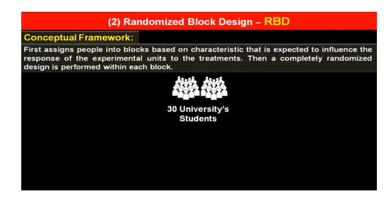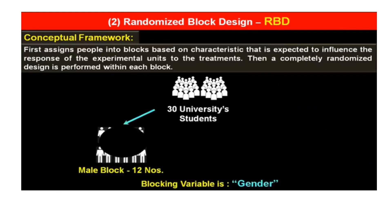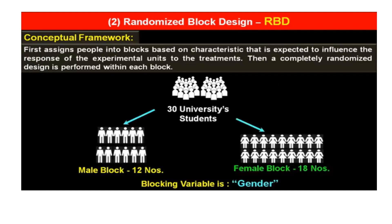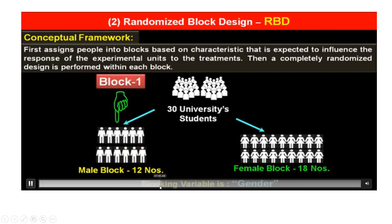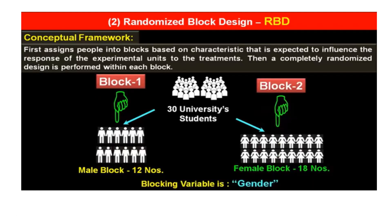Continuing our previous example of 30 university students: the blocking variable is gender. We have divided the 30 students into two blocks — male block and female block. In the male block there are 12 students, and in the female block there are 18 students. Male block is block one, and female block is block two. This is the additional element in this method.